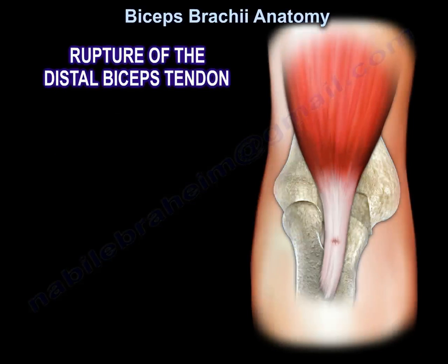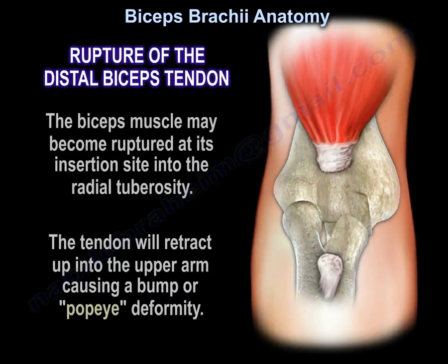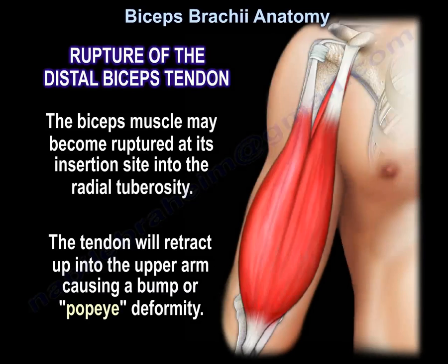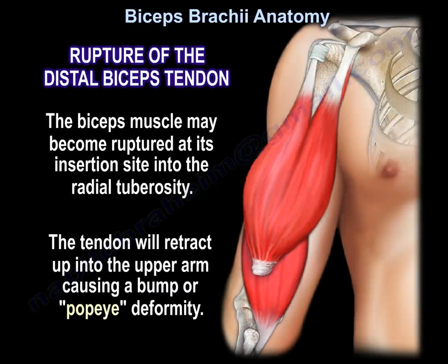Rupture of the distal biceps tendon. The biceps muscle may become ruptured at its insertion site into the radial tuberosity. The tendon will retract up into the upper arm, causing a bump or BAPI deformity.